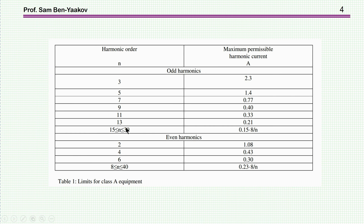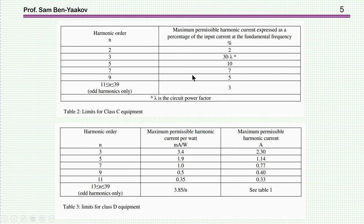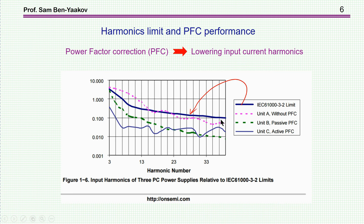For example, class A — look at the third harmonic — it's not supposed to be higher than 2.3 amp. Class A is specified in terms of absolute amps. On the other hand, class C is specified in percent: for example, the seventh harmonic is not supposed to be more than 7% of the main harmonic, the first harmonic of the power consumed by the equipment. So these are the limits, and in order to comply with this standard, you have to do power factor correction, which actually means lowering the input current harmonics.